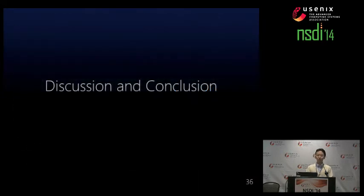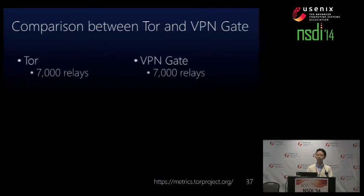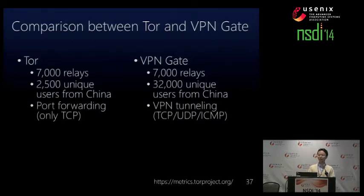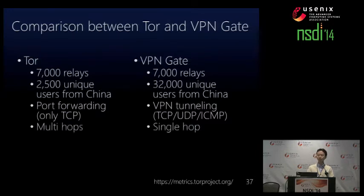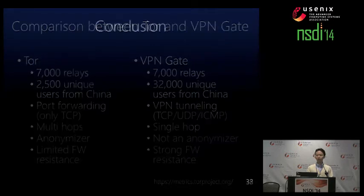Finally, I'm going to talk about discussion and conclusion. First, a comparison between Tor and VPN Gate. They have a similar number of relay servers. However, the number of users from China is much larger for VPN Gate while Tor has a small number. VPN Gate has a VPN tunnelling function supporting TCP, UDP, and ICMP packet transmission, while Tor supports only TCP by default via port forwarding. Tor has multi-hop routing so it is an anonymizer, while VPN Gate is single-hop and is not an anonymizer. Tor has limited firewall resistance while VPN Gate has strong firewall resistance.